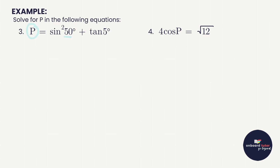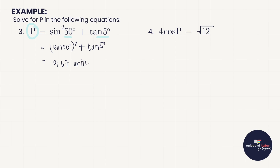In the next example, P is on its own and the angles are in place, so it's straightforward. Note that sin²50° means the whole sine of 50 degrees is squared — not just squaring the 50. So on the calculator: (sin 50°)² + tan 5°. In degree mode, this gives an answer of 0.67 units.